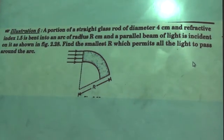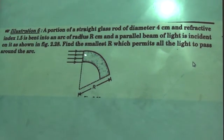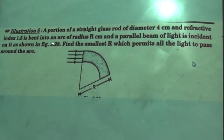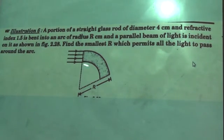We are going with the application: refraction and plain surfaces. This is one of the applications. A portion of a straight glass rod of diameter 4 cm, with refractive index 1.5, is bent into an arc of radius R centimeters, and a parallel beam of light is incident on it as shown in the figure. Find the smallest arc which permits all the light to pass around the arc.